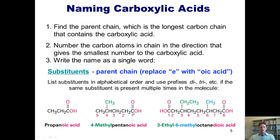Looking at the next compound, we count the number of carbons in the longest chain containing the carboxylic acid and see that the chain is five carbons long. We number that chain beginning at the carbonyl carbon. This five-carbon chain is normally called pentane. Because this is a carboxylic acid, we replace the E at the end of pentane with -oic acid, giving pentanoic acid. This carboxylic acid also has a methyl group as a substituent off carbon number 4, so it is called 4-methylpentanoic acid.